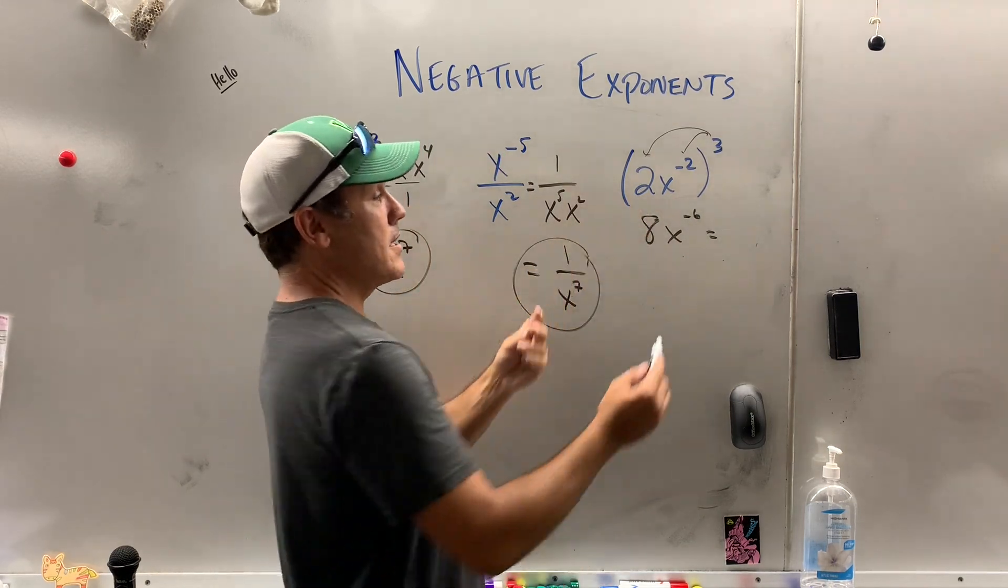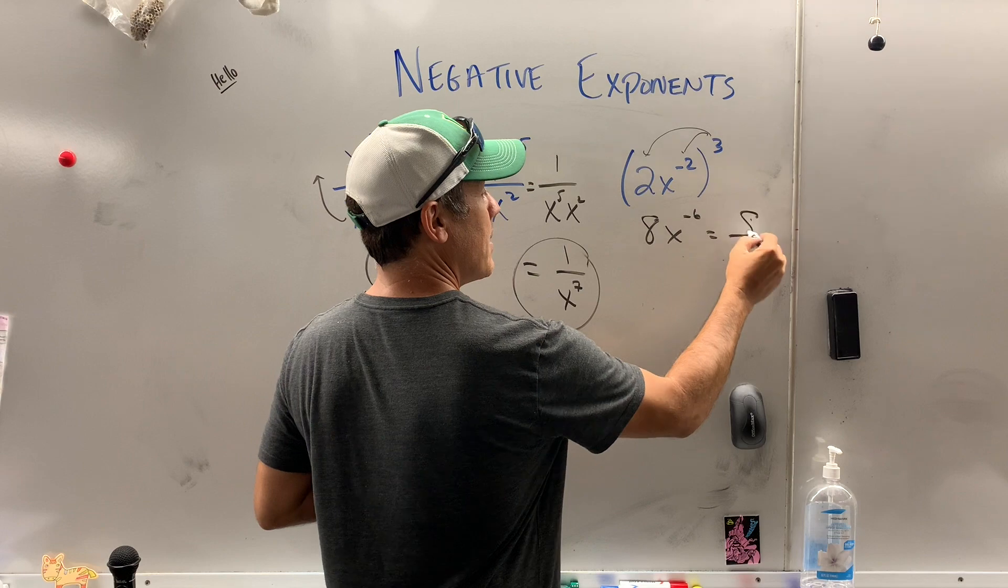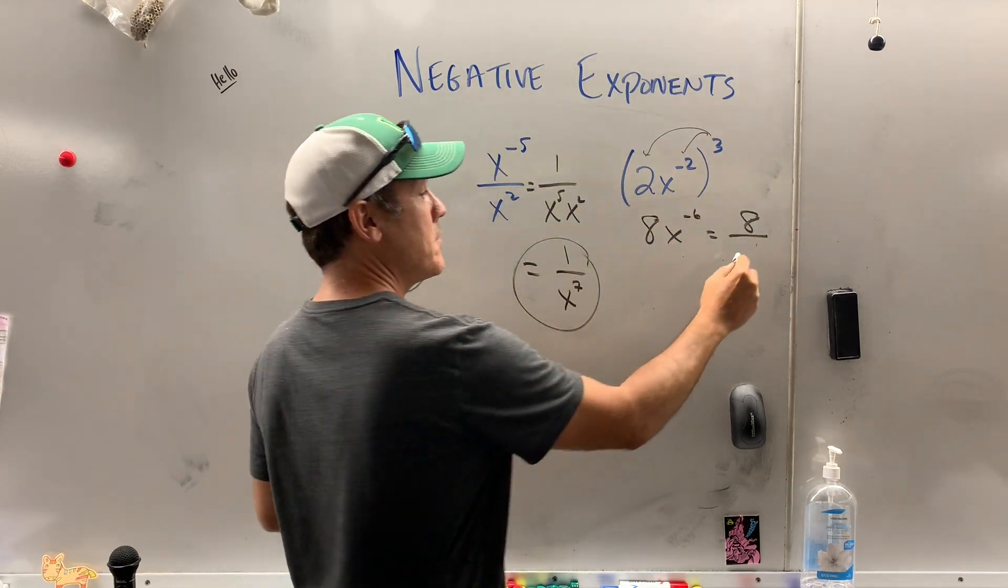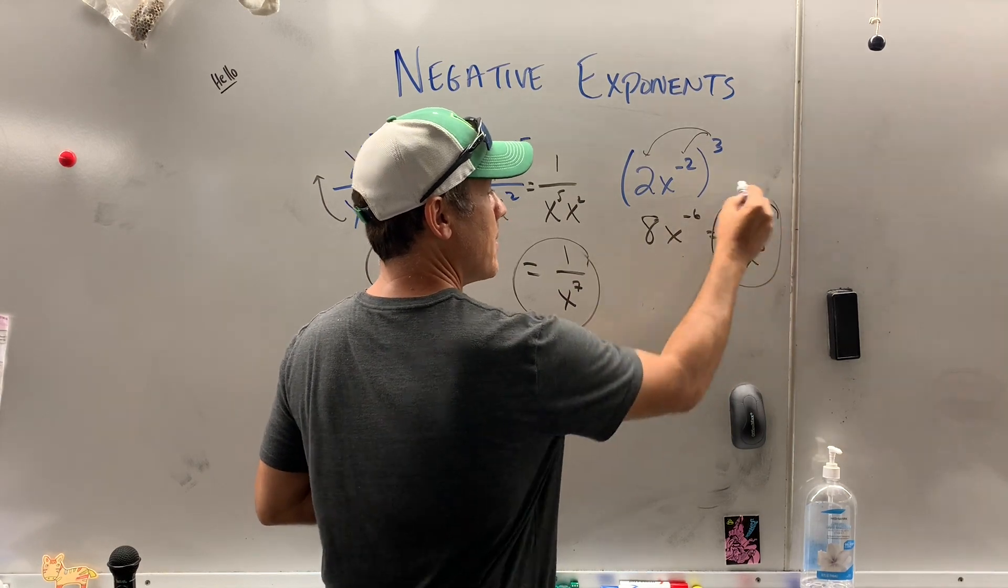This 8 is upstairs, he's being positive, so leave him there. This x to the negative 6 being negative, move him downstairs until he's positive, and there you go.